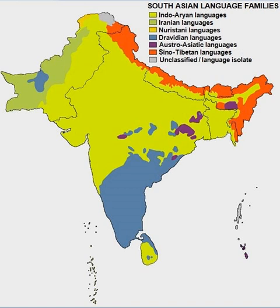The third phase of Telugu history, from 1100 CE to 1400 CE, is marked by further stylization and sophistication of the literary language. Ketana in fact prohibited the use of the vernacular in poetic works. During this period, the divergence of the Telugu script from the common Telugu-Kannada script took place.